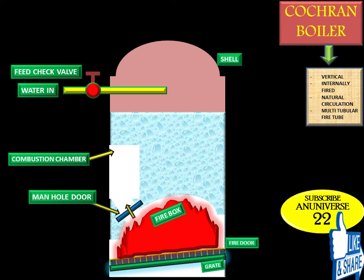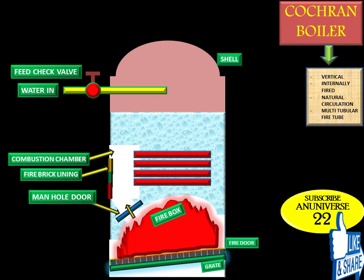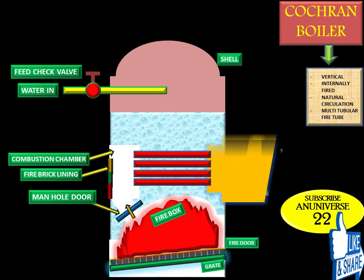Adjacent to the firebox, the boiler has a manhole door, combustion chamber, and firebox. The fire tubes are lined with fire bricks. The smoke or fire tubes are provided within the combustion chamber, are equal in length, and arranged in a group with white space in between them. The ends of these smoke or fire tubes are fitted in the smoke box, and the stack or chimney is provided at the top of the smoke box for discharge of gases to the atmosphere.